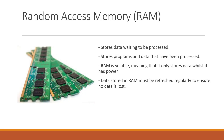Next up, we have the random access memory, or RAM. This is the main form of primary storage in a computer system. When data is loaded from the computer's hard drive, it is stored in RAM before being processed by the CPU. When it has been processed, the processed data is then stored back in RAM, and this allows you to open and use software on your computer. In fact, the web browser and other software you have open on your computer now is working because it is stored in RAM.